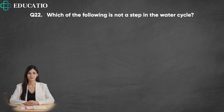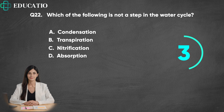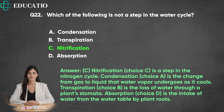Question 22. Which of the following is not a step in the water cycle? A. Condensation. B. Transpiration. C. Nitrification. D. Absorption. Answer: C. Nitrification is a step in the nitrogen cycle. Condensation (Choice A) is the change from gas to liquid that water vapor undergoes as it cools. Transpiration (Choice B) is the loss of water through a plant's stomata. Absorption (Choice D) is the intake of water from the water table by plant roots.